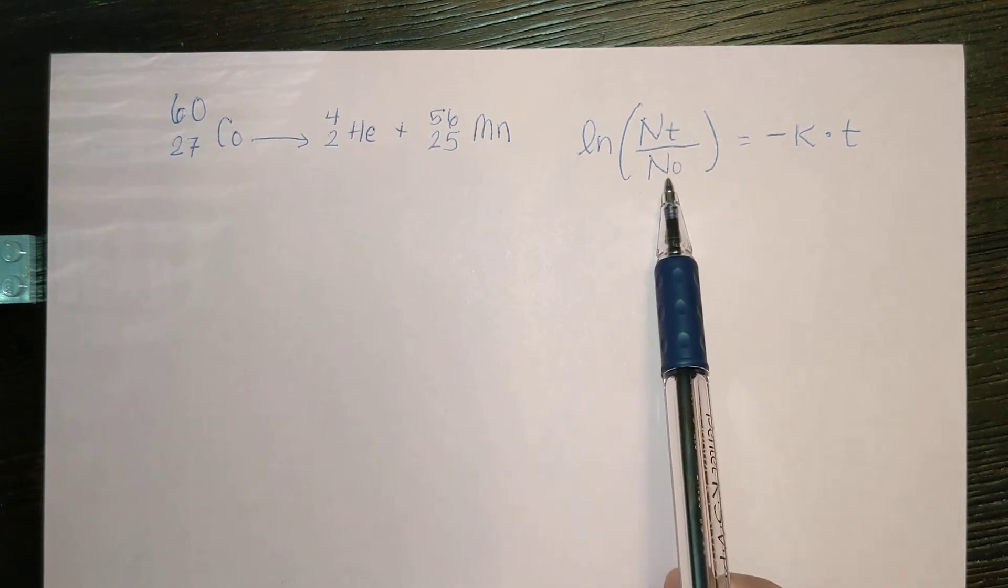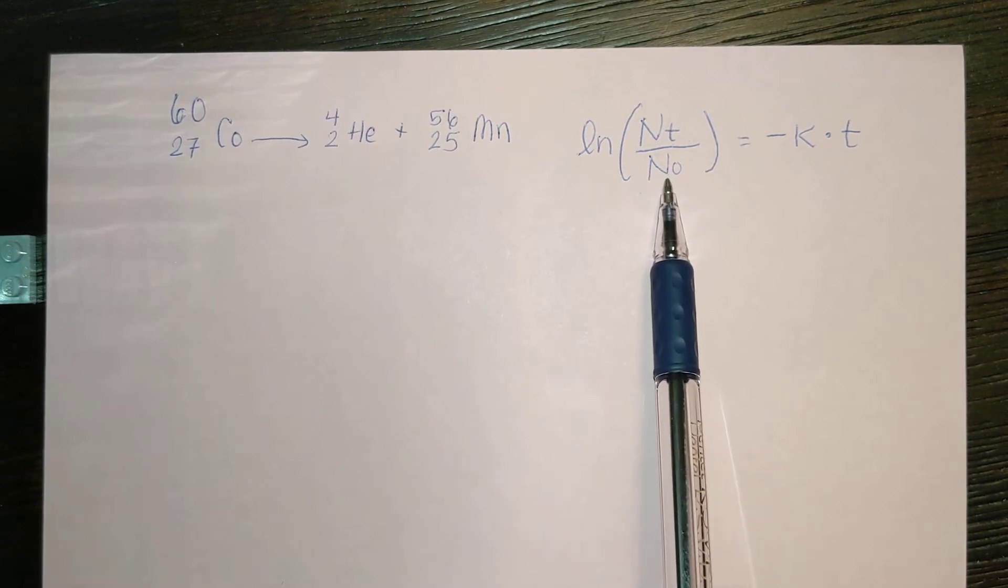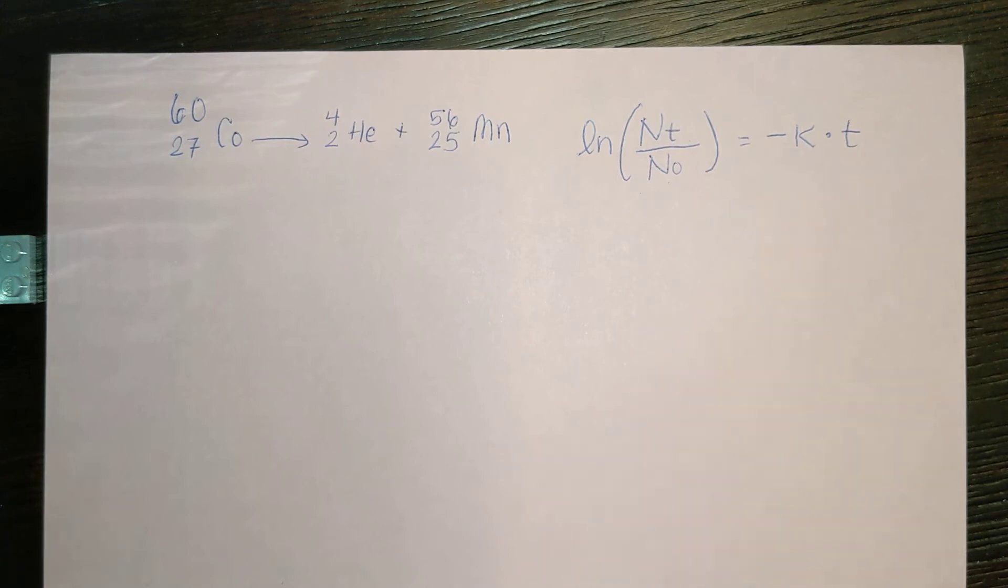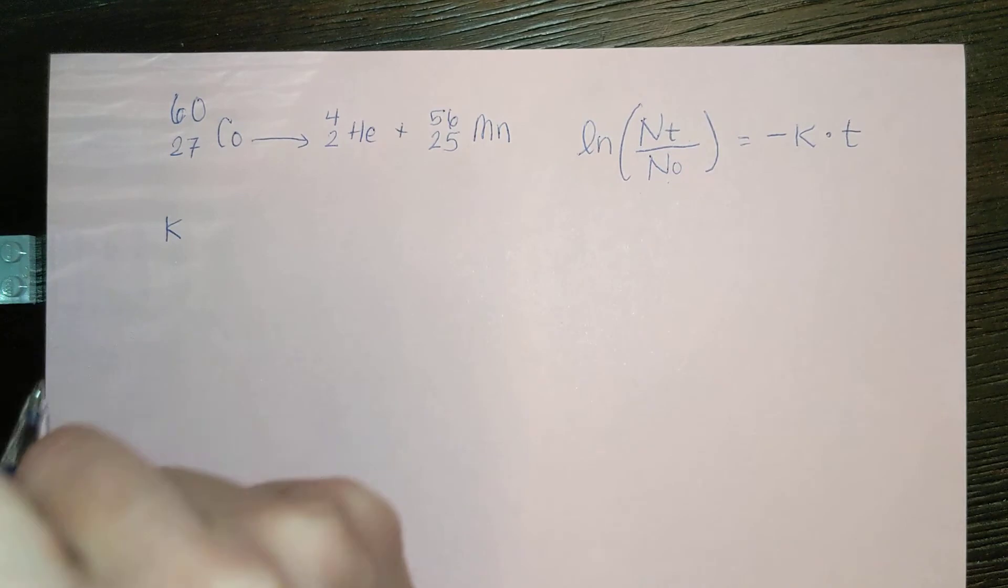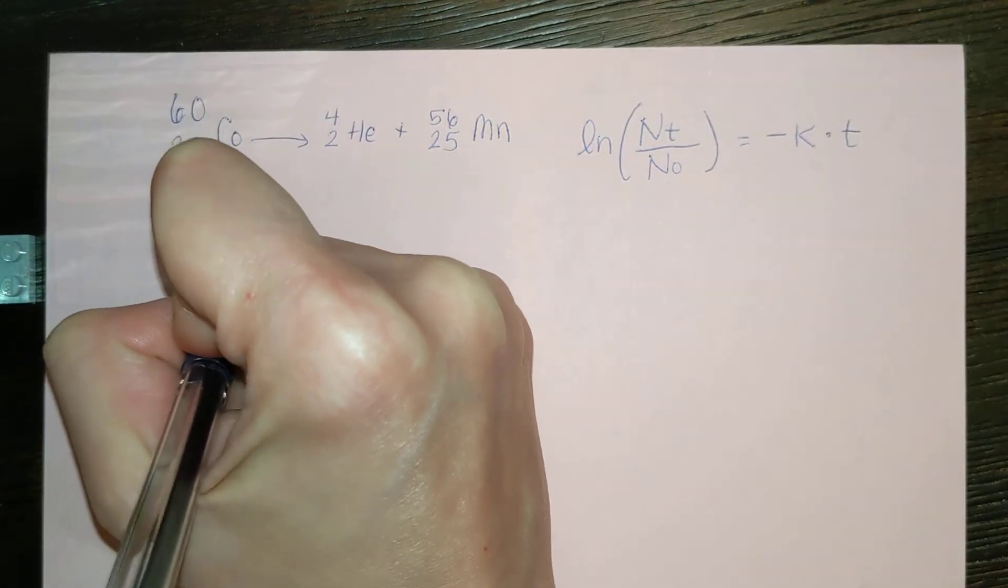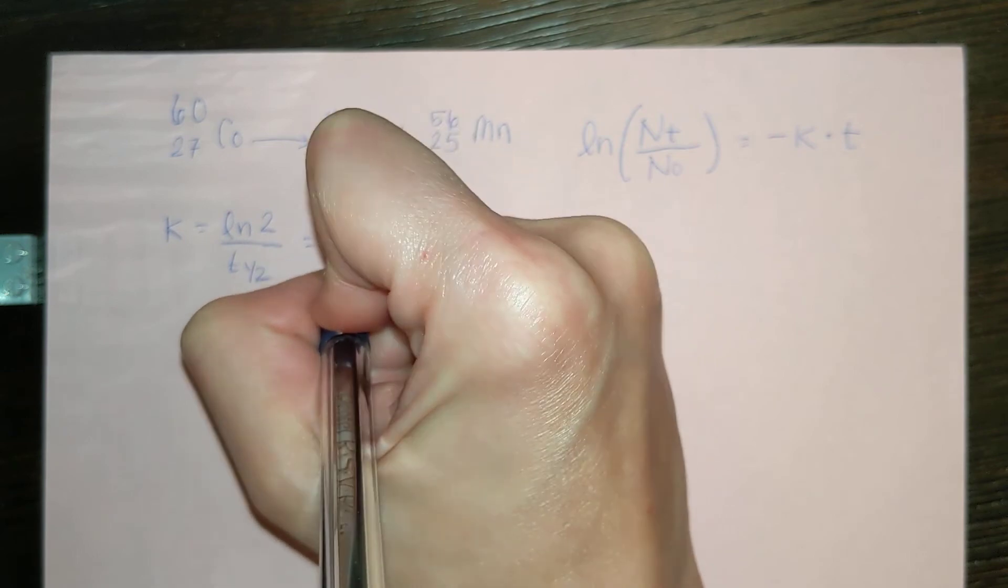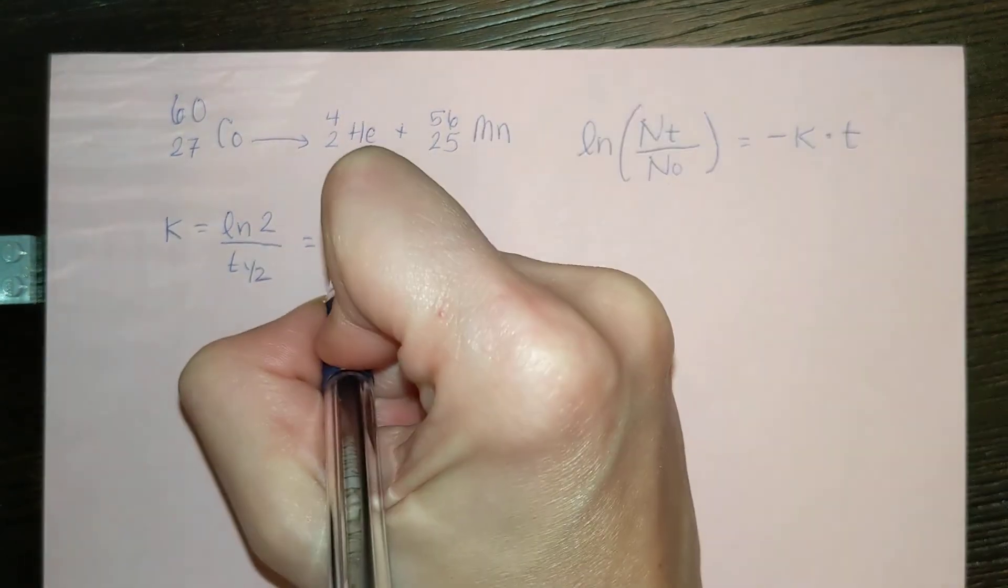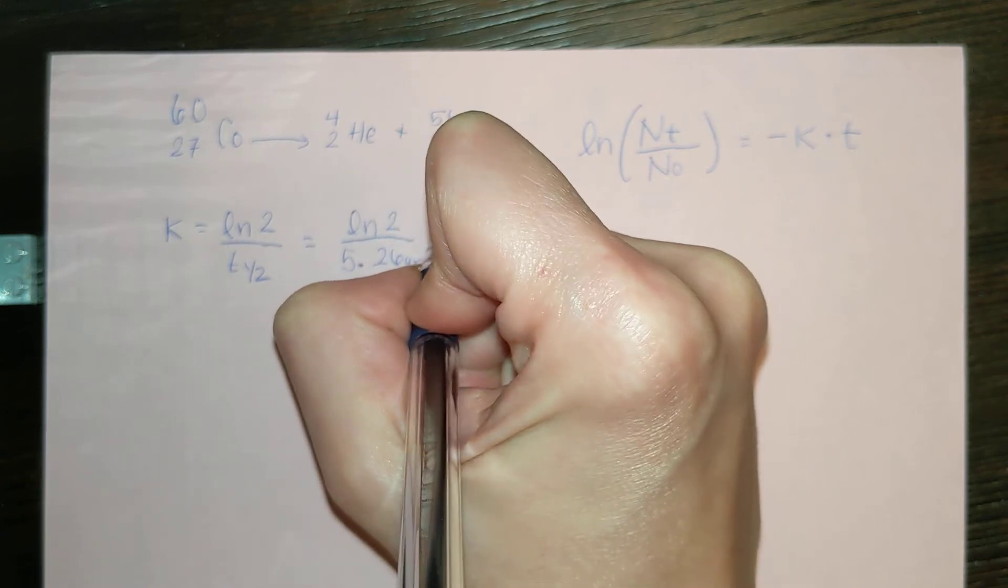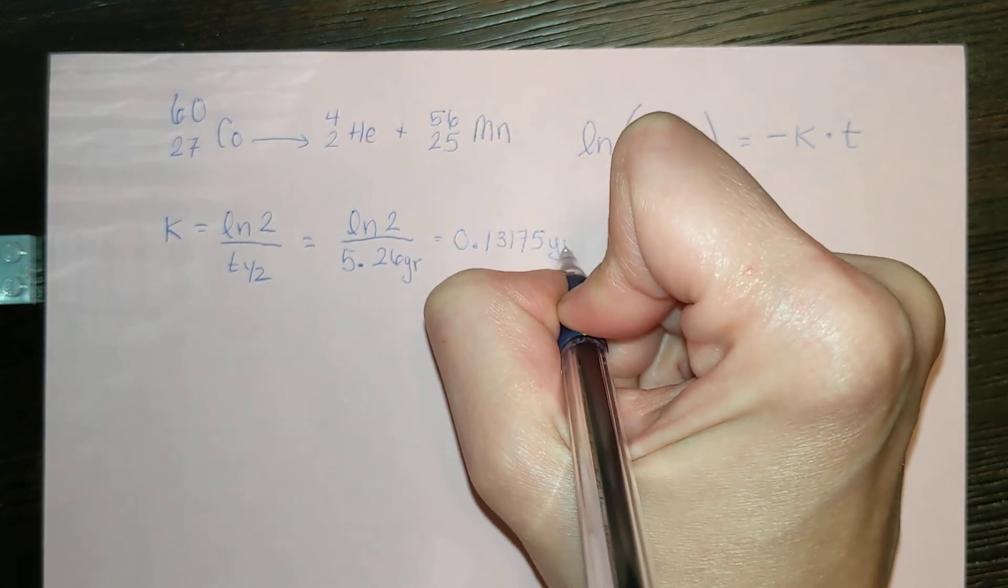We have this, we are solving for this, we have this, so we just need to find k. We have our k equals natural log of 2 over t1/2. So we have our natural log of 2 over our half-life in the problem of 5.26 years equals 0.13175 year minus 1.